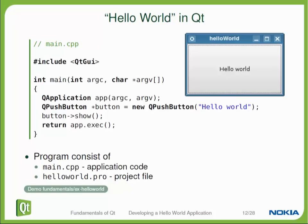The next line is the beginning of the main function. Qt uses a very regular main function like every other C++ program. The first line in main, almost always, is the instantiation of a QApplication object. You need a QApplication object to use the Qt facilities, for example, to connect to the screen and show a window on the screen. You will always create this QApplication object as the first object in the application.